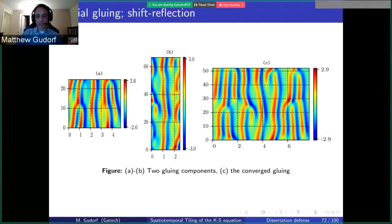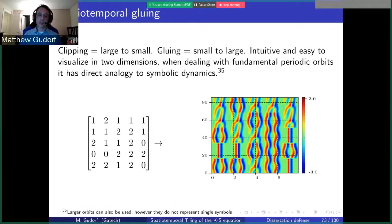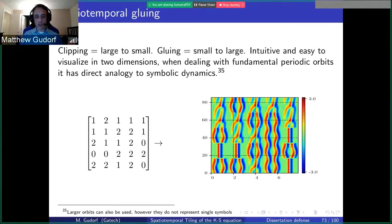If you take the result of spatial gluing and glue it with yet another shift-reflection invariant orbit whose tile size is vastly different — one has temporal period approximately 25, the other at 65 — you can still glue them together. Using that approximation, you can find another periodic orbit with shift-reflection symmetry. It makes sense that the temporal period is approximately the average of the two original ones. These spatial and temporal gluing cases were test cases for the more general building block case of spatiotemporal gluing.